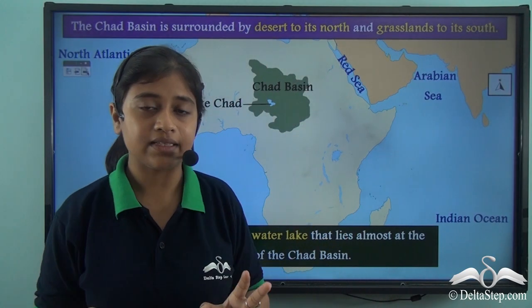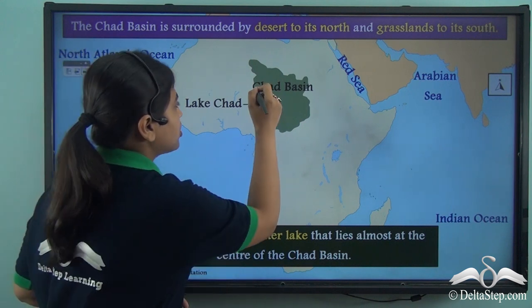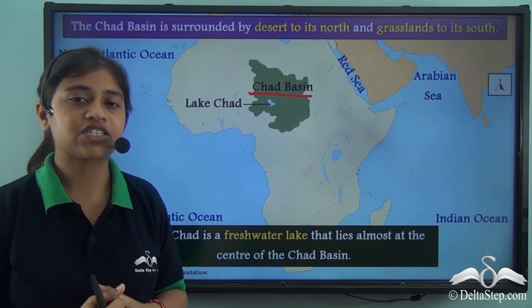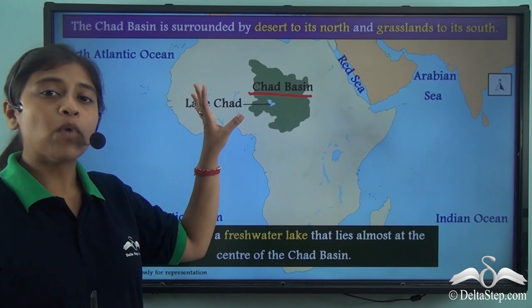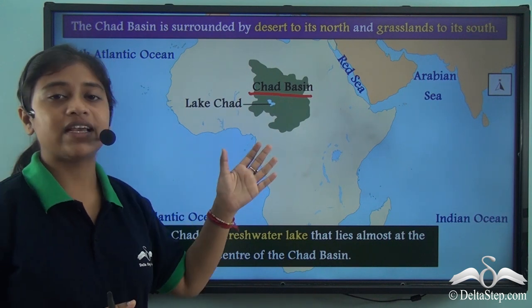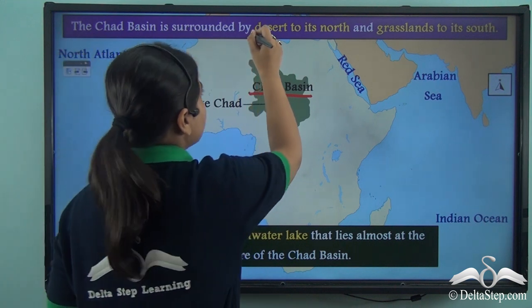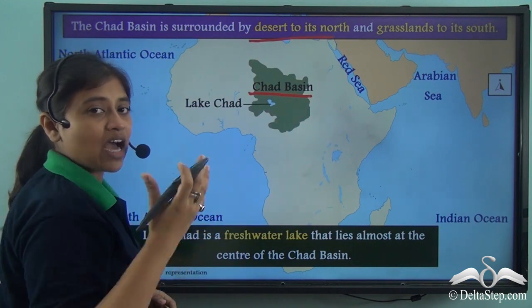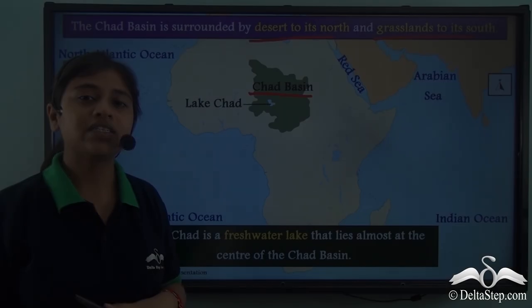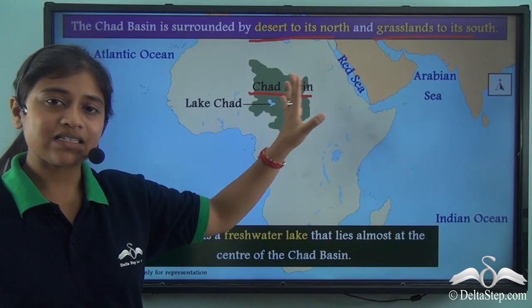Moving northwards towards the Chud Basin, we see that the characteristics of this basin change because of different climatic conditions prevailing in the northern portion of the continent. Most of the northern portion is covered by desert, and to the south of the desert we have the savannah grasslands of Africa. The Chud Basin is surrounded by the Sahara Desert to its north and the tropical savannah grasslands to its south, and it has a major influence from both these types of regions.